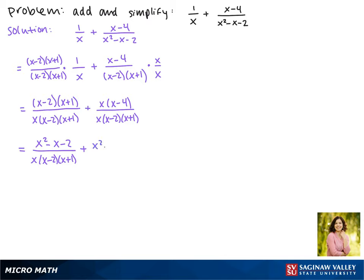In this term, we get x² - 4x over x(x - 2)(x + 1).